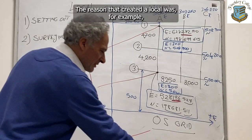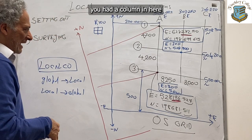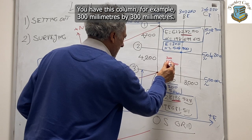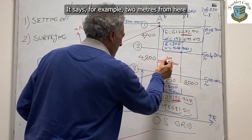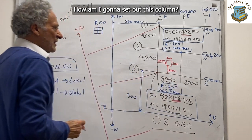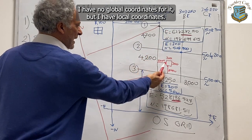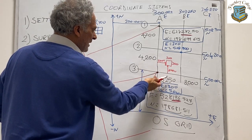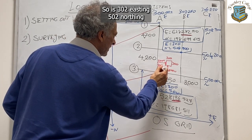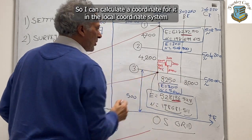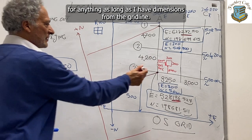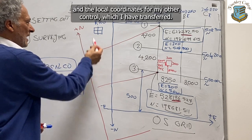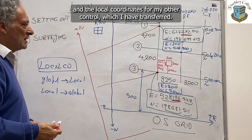I want to explain why we created a local system. For example, you have a column here to set out — 300 millimeters by 300 millimeters — and it is 2 meters from here and 2 meters from here. I have no global coordinate for it, but I have a local coordinate. If this corner's easting is 300, the easting for the column will be 302 because it is 2 meters away. The northing is 500, so the northing for the column is 502. I can then calculate a coordinate in the local system and do a resection based on local coordinates to set it out on site.